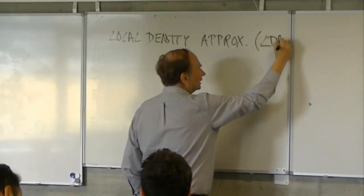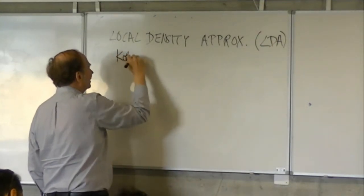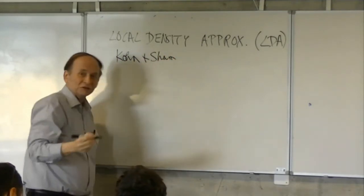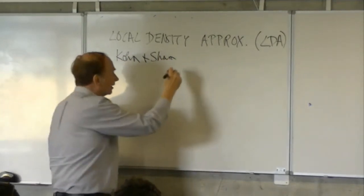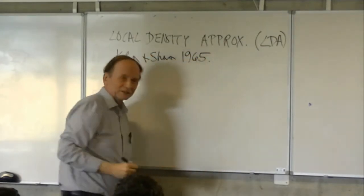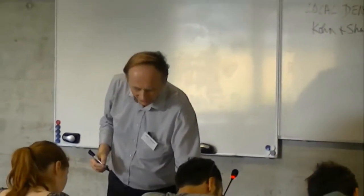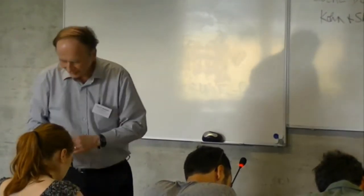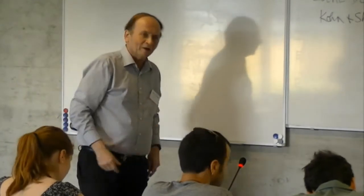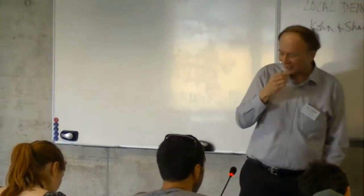This is called the LDA, and it comes from Kohn and Sham — the same paper where they derived the exact Kohn-Sham equations that Ciaran told you about. They also proposed this local density approximation for the exchange-correlation. Now, before Kohn and Sham, in the 1950s, there was work by John Slater.